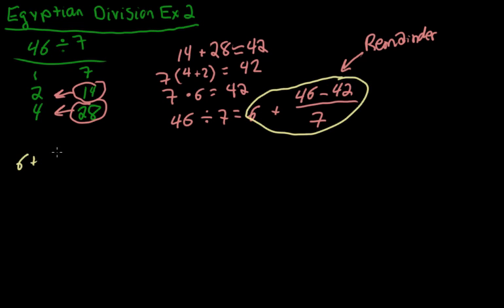So 6 plus 46 minus 42 over 7 is equal to 6 plus 4 sevenths. Well, they don't like to write anything like that. 4 sevenths, there's still, there's not a 1 in the numerator there.